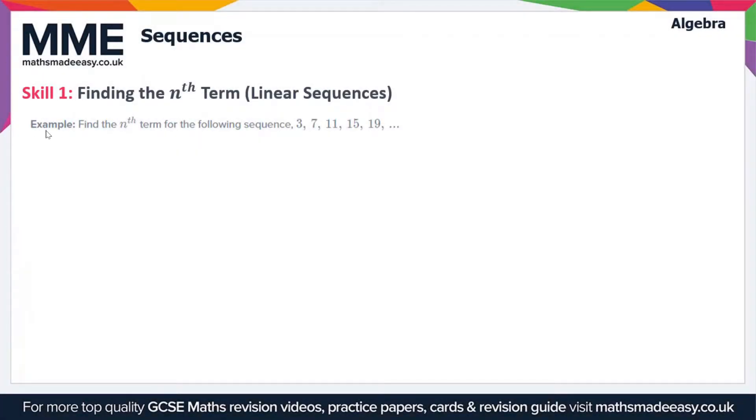Welcome to the Maths Made Easy tutorial on sequences. There's going to be a few videos on this topic. In this first one we're going to look at finding the nth term of a linear sequence. So a linear sequence takes the nth term an plus b. This is a formula that describes how you move from one term to the next in a sequence, and a and b are constants that we've got to determine by looking at the sequence.